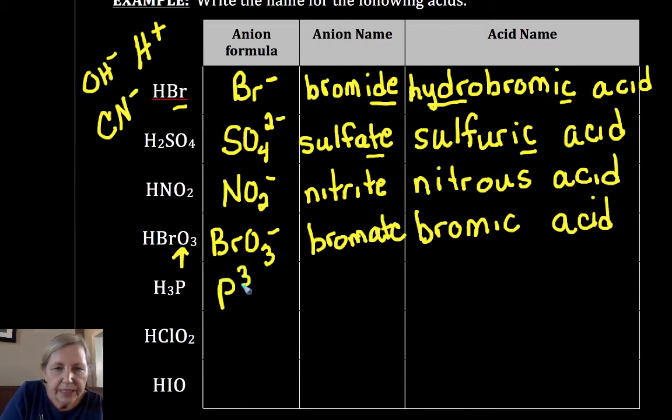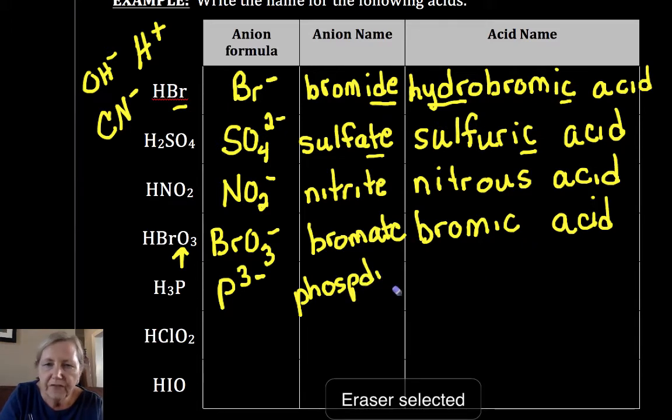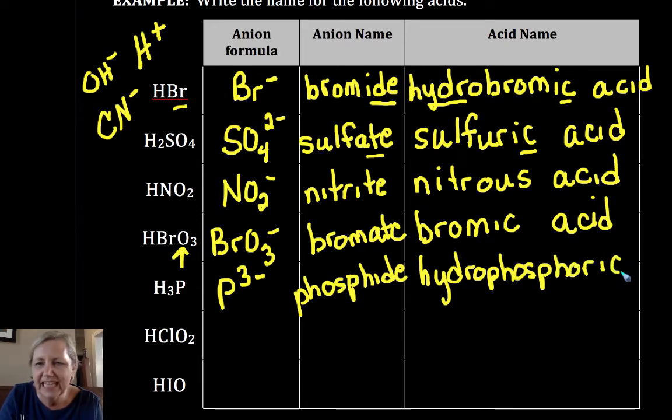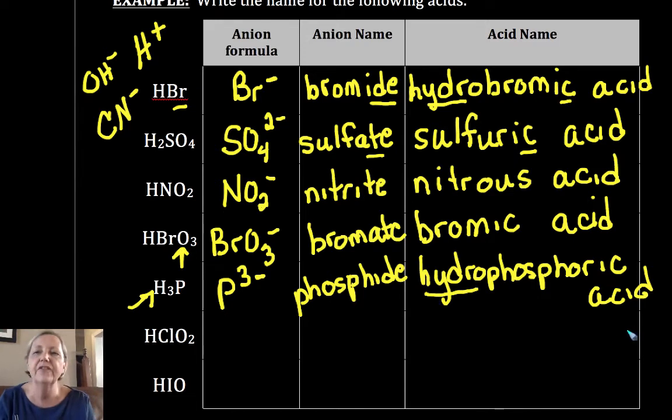This is P 3-. That's the phosphide ion. Phosphide goes to hydro-ic. So that becomes hydrophosphoric acid. Do you see that -OR popping right back in there? This is a binary acid. The binary acids have hydro in front of it. Remember, no O, hydro.